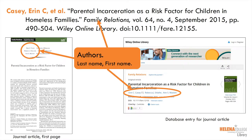For an article with three authors, give the first author's name followed by et al. and a period. The first author's name will be given as last name, comma, first name, middle initial or name.